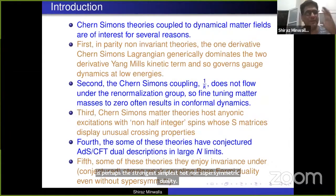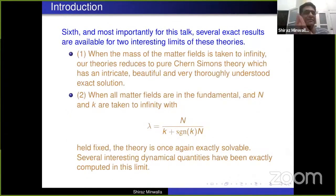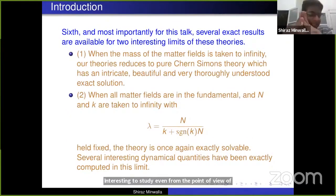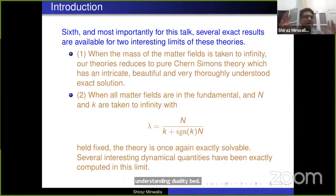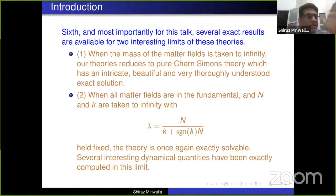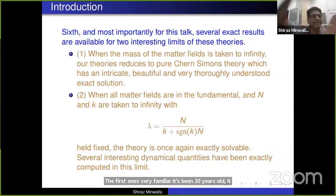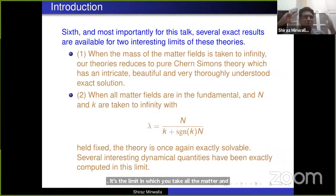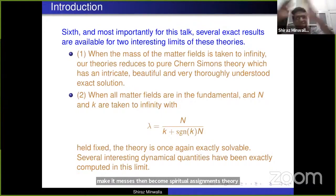It sounds interesting to study even from the point of view of understanding duality better. And sixth, and most importantly for my talk, these Chern-Simons matter theories admit two interesting solvable limits. The first is very familiar, probably 30 years old: the limit in which you take all the matter and make it massive, which then becomes pure Chern-Simons theory — an exact, beautiful solution which we understand very well.